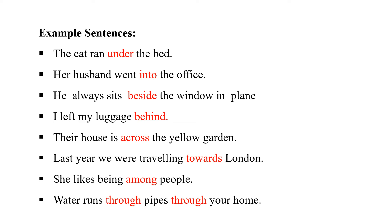तीसरा sentence है: he always sits beside the window in the plane. वो हमेशा जहाज़ में window के करीब बैठता है. 'Beside' आपको बता रहा है nearness of something. अगला sentence है: I left my luggage behind. मैंने अपना luggage पीछे छोड़ दिया — again direction बता रहा है. Their house is across the yellow garden. उनका घर yellow garden के पार है. 'Across' कहते हैं पार को — across the road, across the garden, across the woods — एक सिरे से दूसरे सिरे तक.